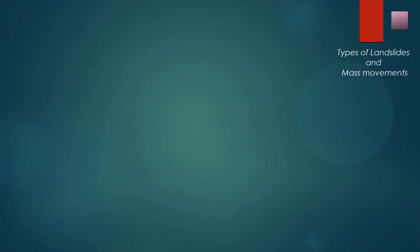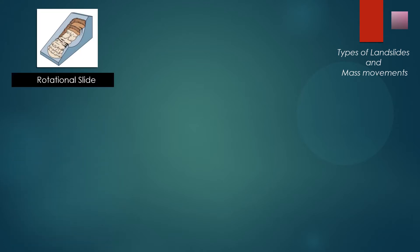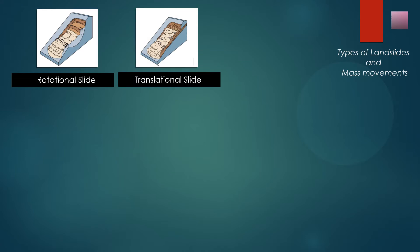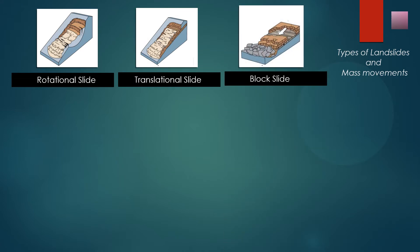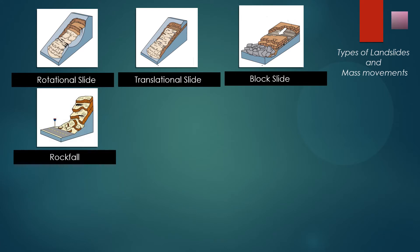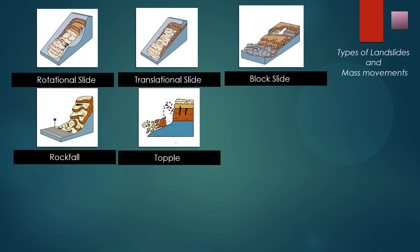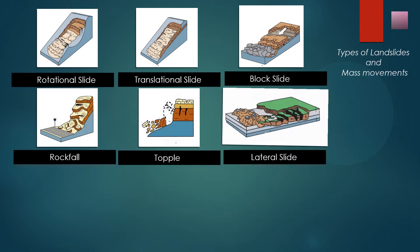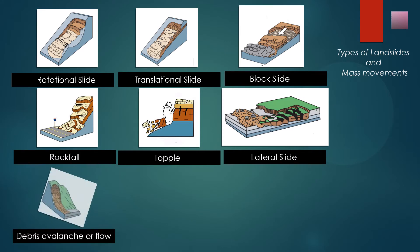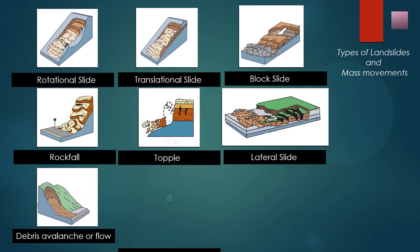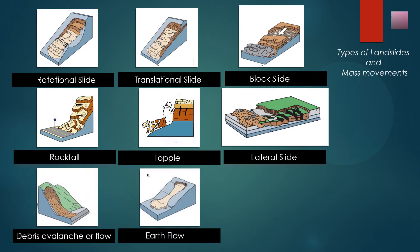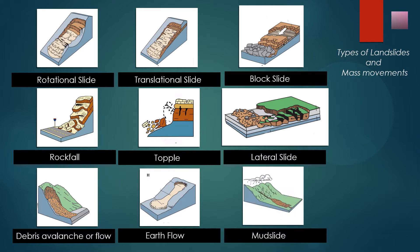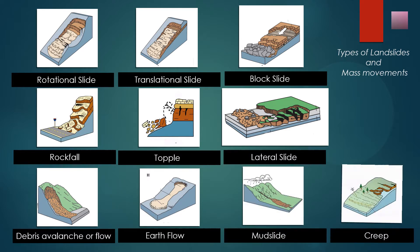Here we have some types of landslides and mass movements: a rotational slide, a translational slide, a block slide, rockfall, topple, lateral slide, debris avalanche or debris flow, earth flow, mudslide and creep.